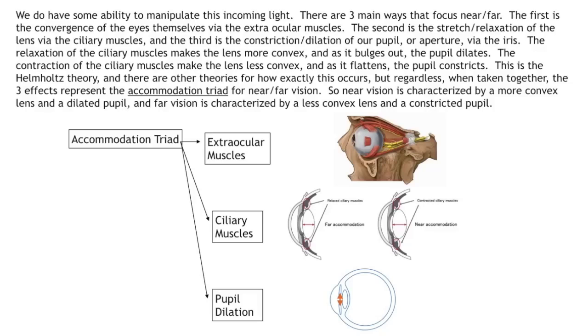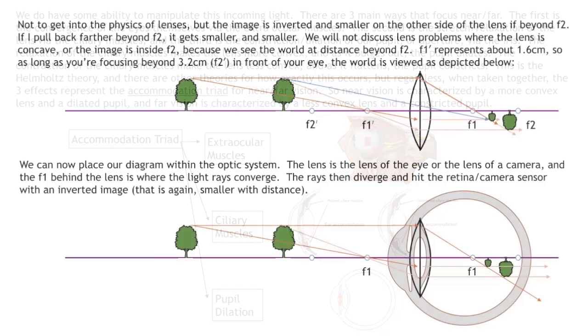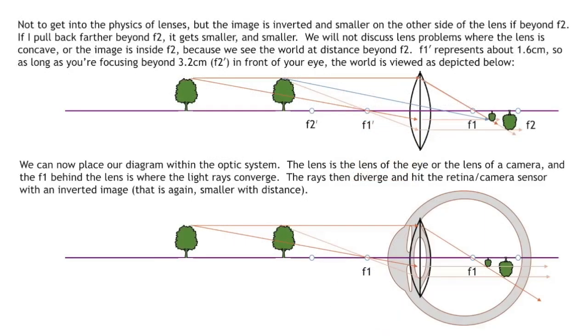The light from the things you're looking at has to pass through the small opening to reach the back of your eye so you can see it. When things are very far away, the light spreads out more before it reaches your eye. It's like shining a flashlight on a wall.